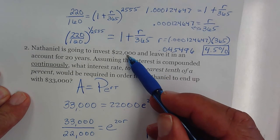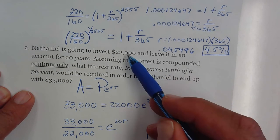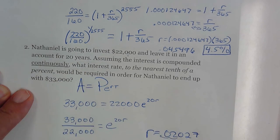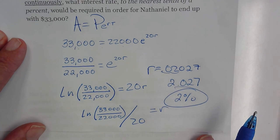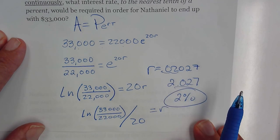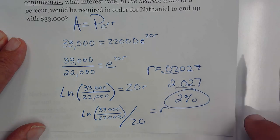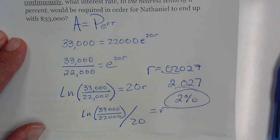So Nathaniel is going to need an account that pays about two percent interest in order for him to make his $22,000 go to $33,000 in 20 years. Much easier step. You might want to press pause and stare at that process for a couple minutes or so. Good luck.